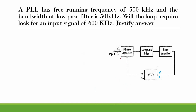We have the phase detector block, low-pass filter block, error amplifier block, and VCO block. The free running frequency of the oscillator is given as F naught equal to 500 kilohertz. The bandwidth of the low-pass filter is given as 50 kilohertz. The input signal frequency is given as FS equal to 600 kilohertz.